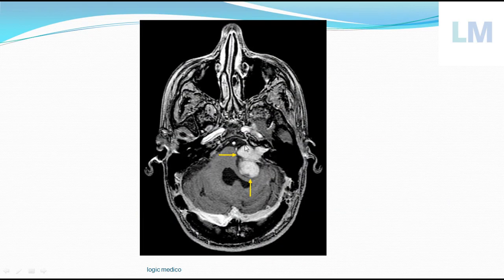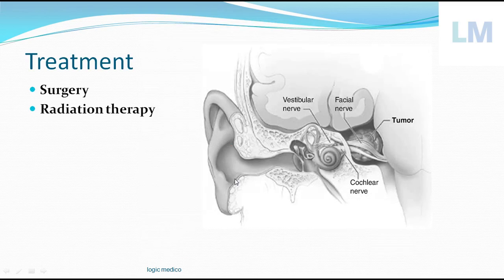In Stage 4, the tumor is already very large — the radiologist has marked it with an arrow. It is intracranial, not just touching but pushing the CP angle, cerebellum posteriorly, and the pons. There is midline shift; the ventricles — especially the fourth ventricle, the cavity near the cerebellum — are narrowed. This can also result in hydrocephalus.